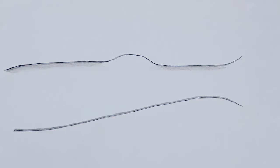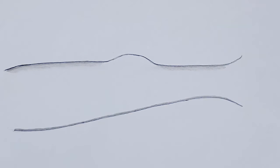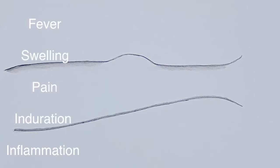The organisms causing abscess include Staphylococcus aureus, which is the most common, Streptococcus pyogenes, and gram-negative organisms like E. coli, Pseudomonas, and Klebsiella. Anaerobic bacteria can also cause abscess formation.